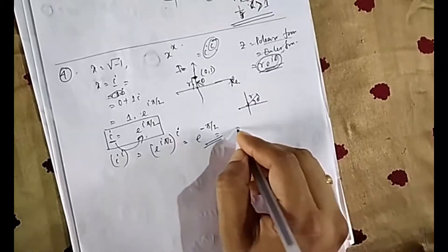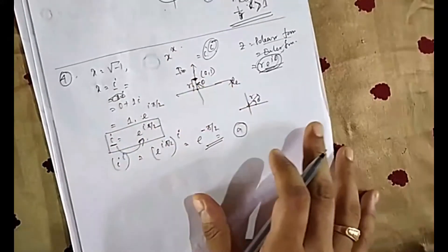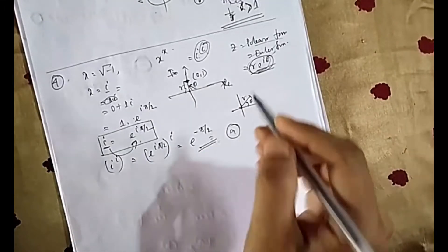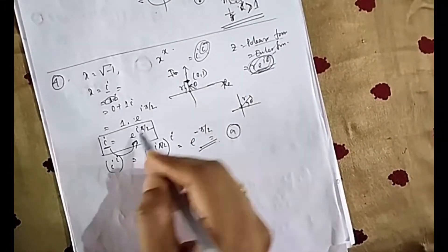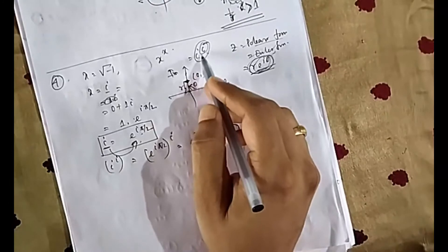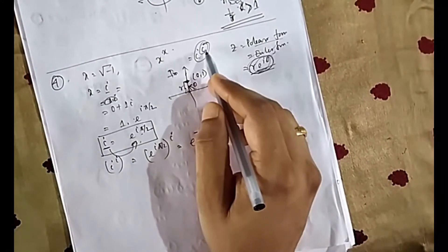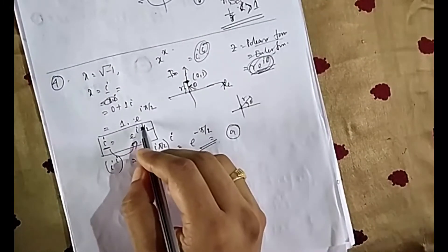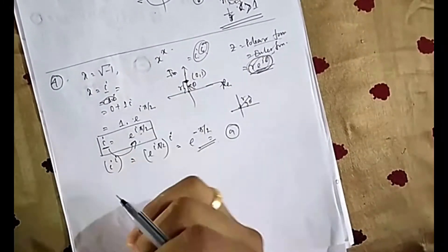The answer is e^(−π/2), which is option A. This demonstrates the importance of polar or Euler's form. When a complex number appears in someone's mind as a power, you bring it down by converting to Euler's form so that you can operate on it.